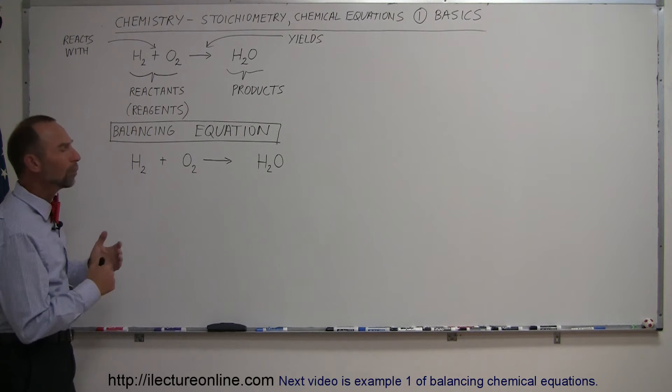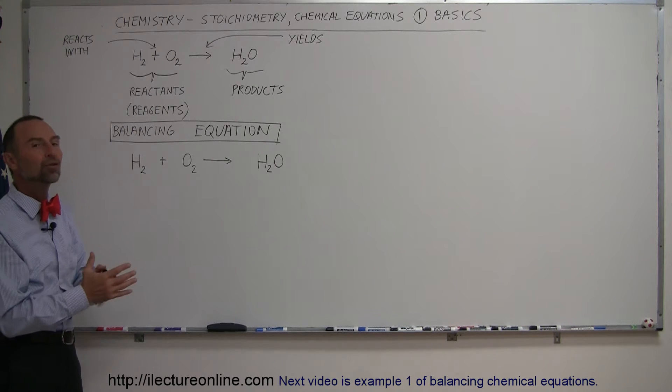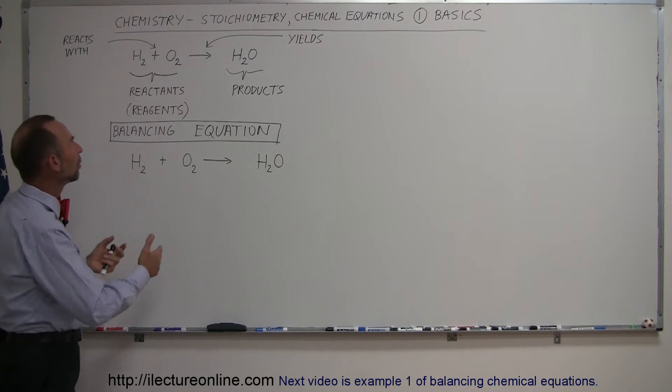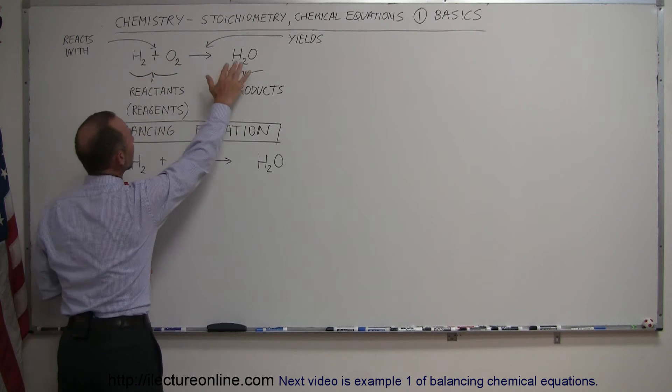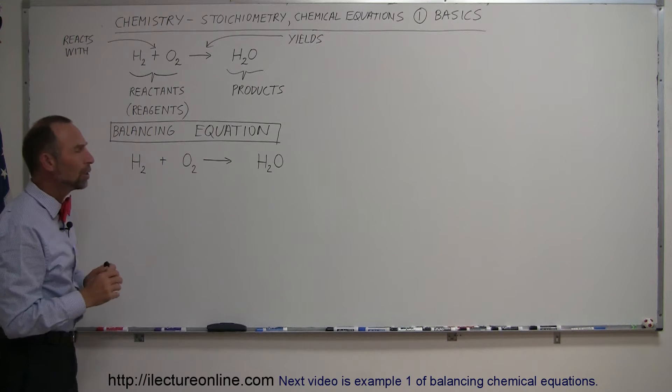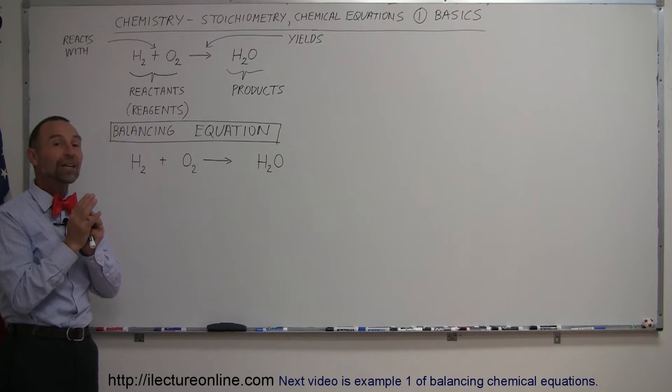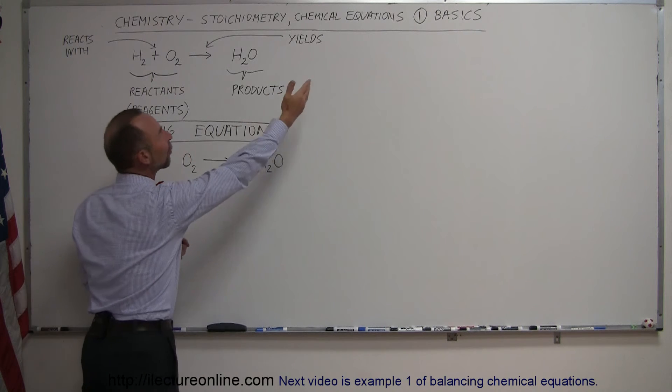So why do we need to balance equations? Well technically, if we ignore the amount that we start with and the amount that we end up with, we're simply indicating that you need some hydrogen and you mix it with oxygen, and you end up with some water. But if we want to be more particular about it, we know that we need to have a certain amount of each to make that reaction possible, so there will not be leftovers at the end.